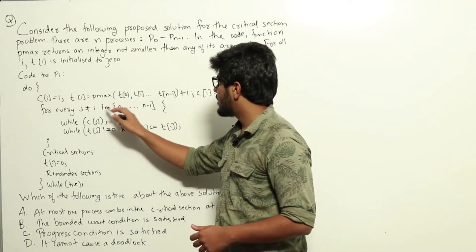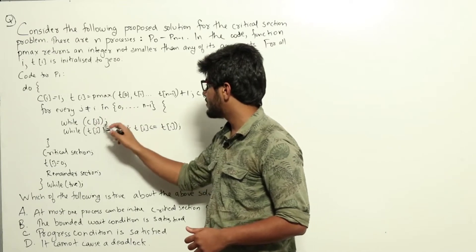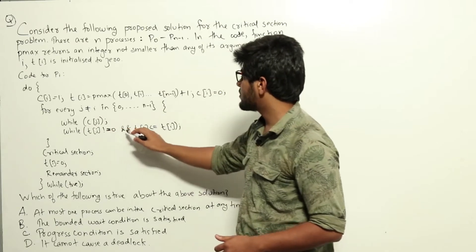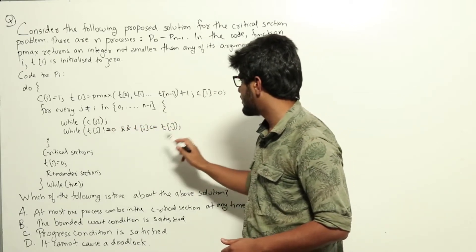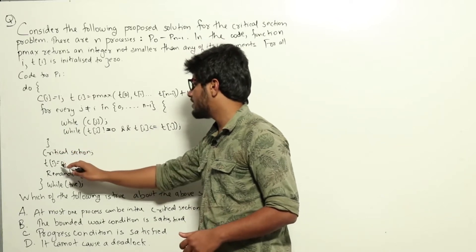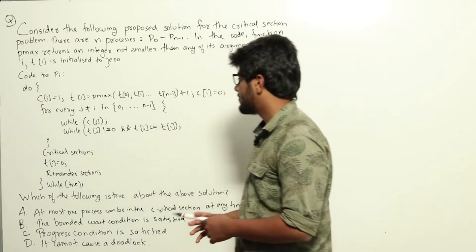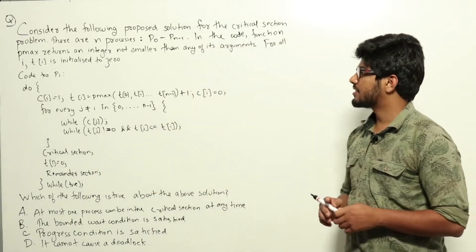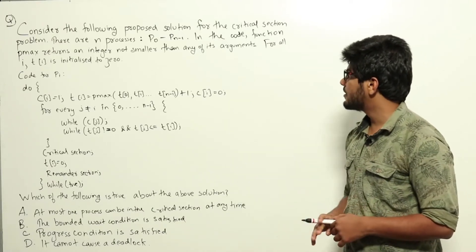For every j not equal to i in 0 to n-1, there is a while loop on c[j] that will stop, then another while loop: while t[j] not equal to 0 and t[j] less than or equal to t[i]. After the critical section, t[i] is initialized to 0, followed by the remainder section. This is the code for the critical section, with n processes p0 to pn-1.